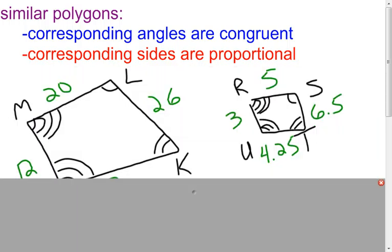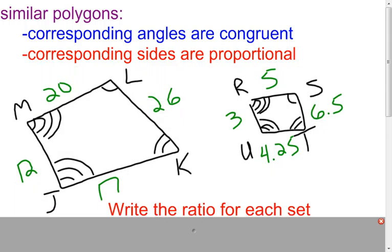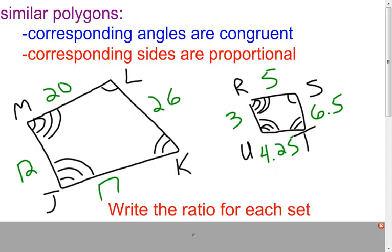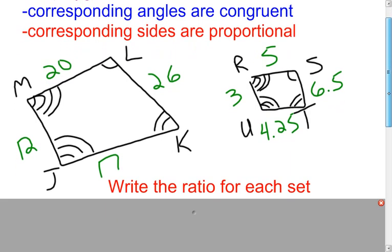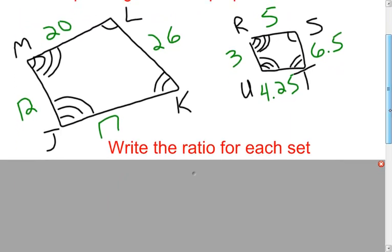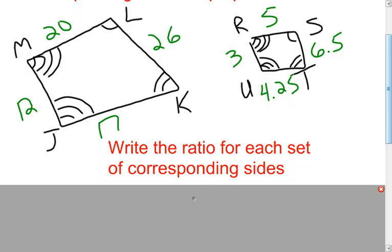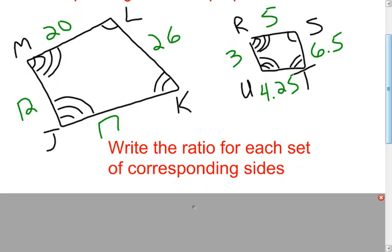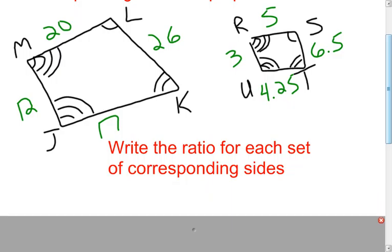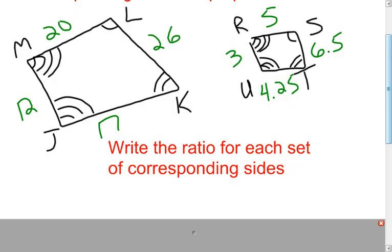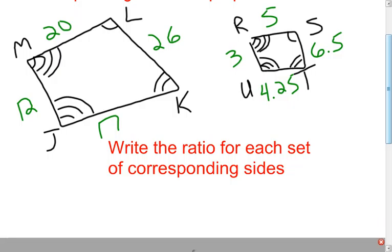Now I'm going to take a look at two polygons here. What I'm going to do is go through and do the check: are these two polygons similar? The first thing I'm going to do is check the sides to see if the sides are proportional. I'm going to start off by writing ratios for each side.